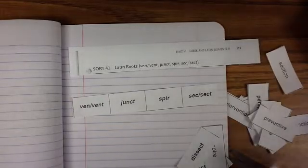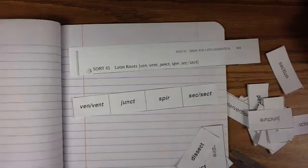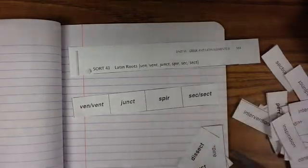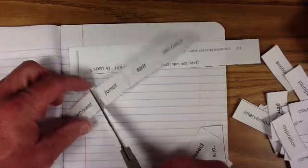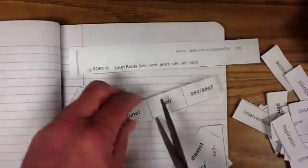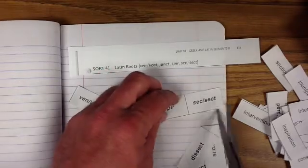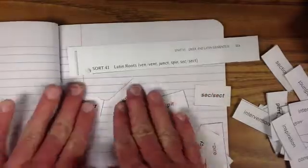All right, I think we've got almost all of them there. So it looks like what we have here is we've got a couple of words or our Latin roots, which is ven, vent. We've got junct, which is kind of funny. We've got spir, and then we've got sec or sect.